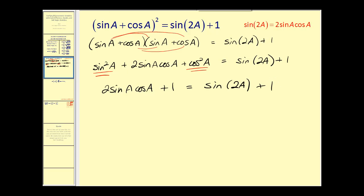And now believe it or not we have it. Remember the identity sine two a is equal to two sine a cosine a. So we can replace this with sine of two a.